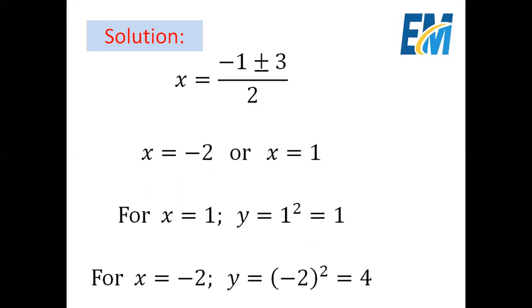From the fourth equation y equals x squared: for x equals one, y equals one squared which is one. And for x equals minus two, y equals (minus two) squared which is four. So the first solution pair is (1, 1) and the second is (−2, 4).